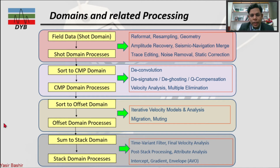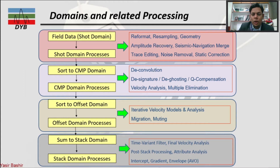After that we have the offset domain, which is also very essential. Normally when we are looking at amplitude versus offset, we use the near, mid, and far offset, or either we have the angle stack. Offset stack and angle stack are quite similar, and that is also done for interactive velocity analysis and migration and muting of the data.